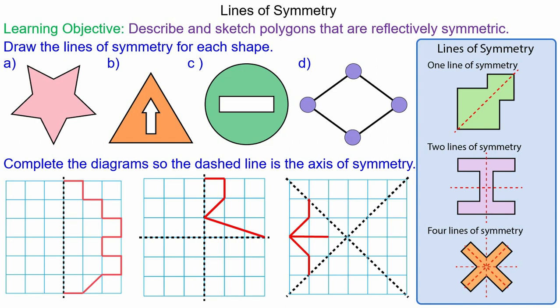In this lesson we're going to identify the lines of symmetry in a 2D shape and we're going to reflect an object in its axis of symmetry. We'll begin with question a.